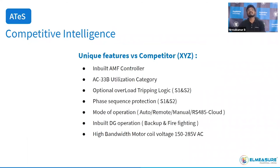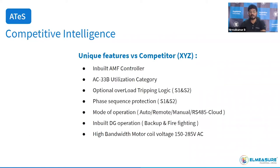Competitive intelligence: compared to any competitor in India or the global market, we have seven key unique features — inbuilt AMF controller, AC33B utilization category, overload tripping logic for source one and source two, phase-sequence protection for both sources, three modes of operation (auto, remote, manual) with RS-485 and cloud facilities, inbuilt DG operation for both backup and firefighting generator, and a motor and PCB designed to withstand up to 300V AC.